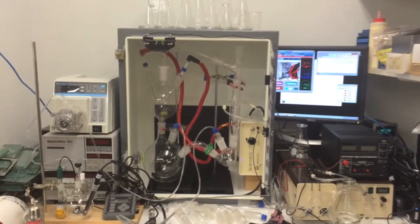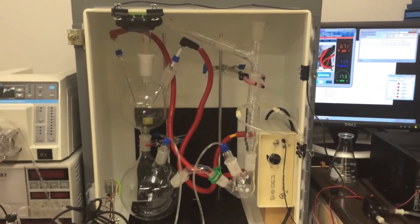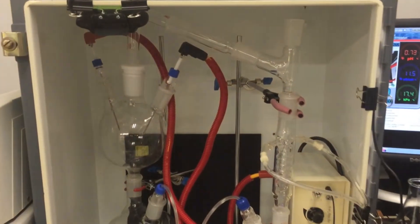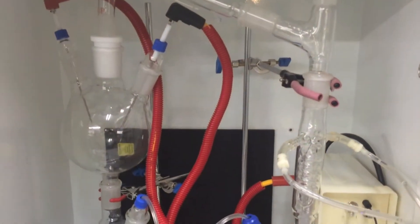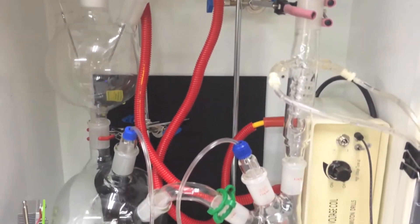Our experiment will consist of some flasks and tubes. We are using methane, carbon dioxide, ammonia, nitrogen, and water vapor to create our very own prehistoric atmosphere.